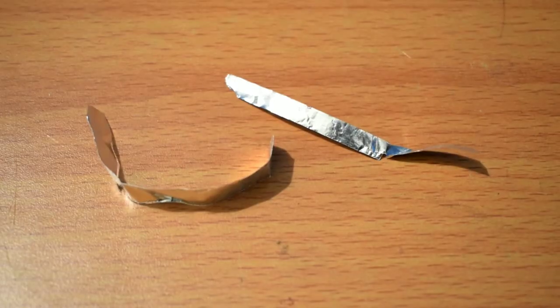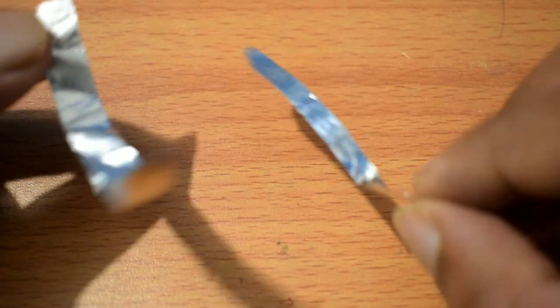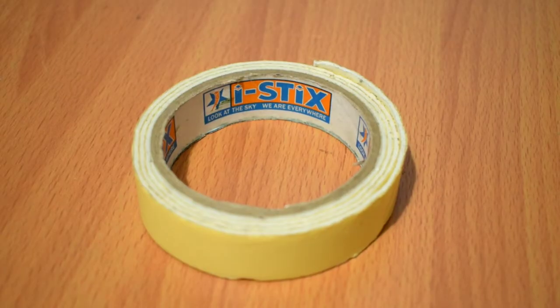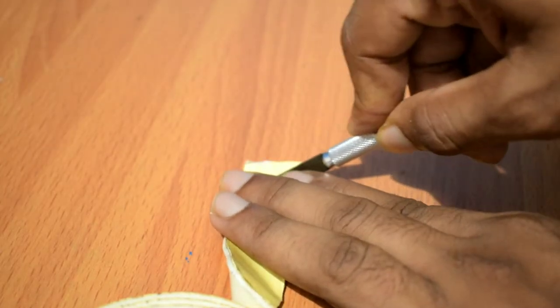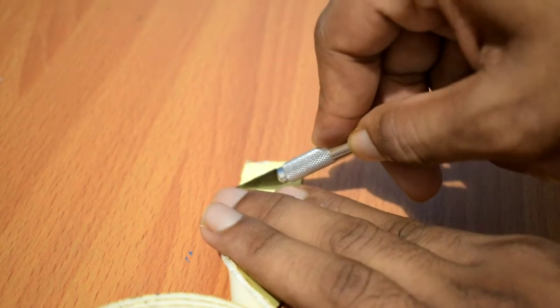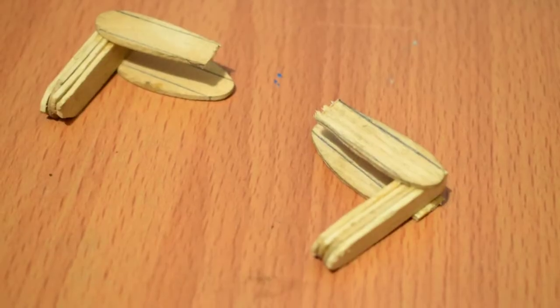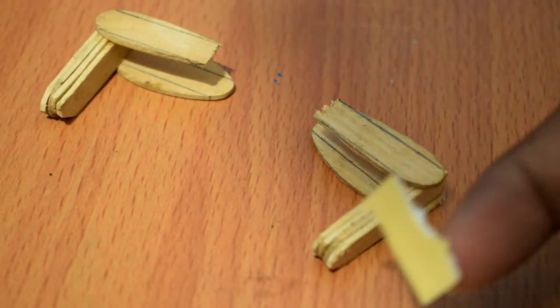I will cut two strips of aluminum foil. Now I will cut the double-sided tape and attach it to the ice cream stick.